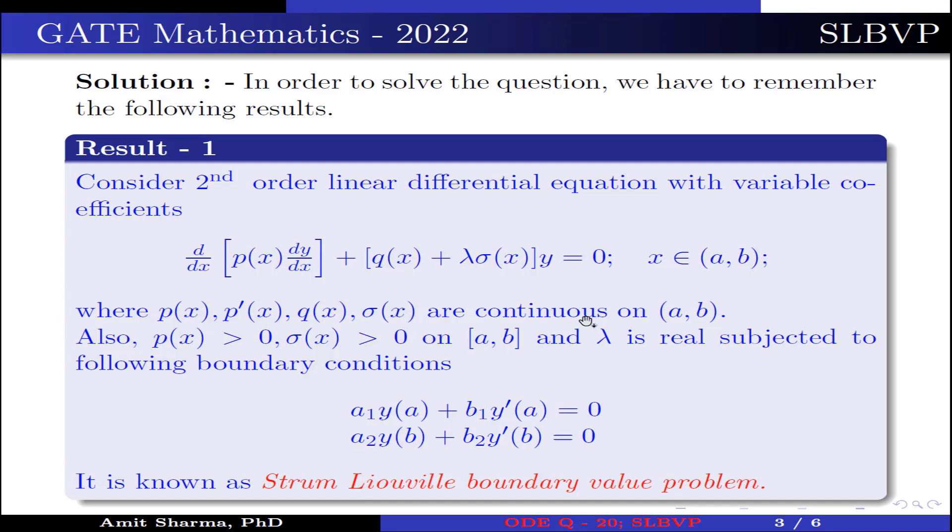Where p(x), p'(x), q(x), σ(x) are continuous on (a,b). Also, p(x) > 0, σ(x) > 0 on [a,b] and λ is real, subjected to boundary conditions a₁y(a) + b₁y'(a) = 0, a₂y(b) + b₂y'(b) = 0. It is known as Sturm-Liouville boundary value problem.